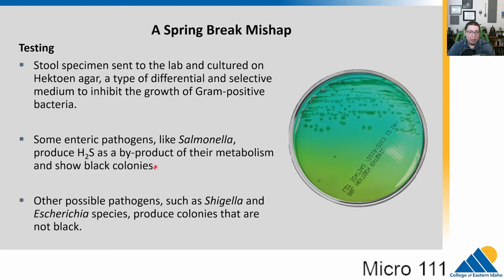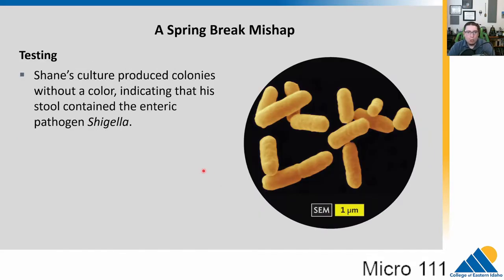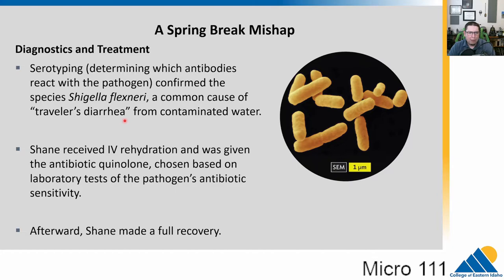Hektoen agar is quite clever: some enteric pathogens like Salmonella produce hydrogen sulfide as part of their metabolism, which turns the colonies black. Other organisms like Shigella or E. coli produce colonies that are not black. E. coli may be lactose-fermenting, so we can differentiate that here, while Shigella will just appear its normal color. These are all indicators that use differences in metabolism to differentiate organisms. His culture produced colonies without a black color, indicating to the microbiologist an enteric pathogen — Shigella. They further refined this using serotyping, applying different antibodies to identify which strain of Shigella it is.